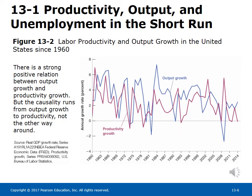The percentage change in employment equals the percentage change in output minus the percentage change in productivity. Empirical evidence from Figure 13-2 shows labor productivity and output growth in the United States since 1960. There is a strong positive relation between output growth and productivity growth, but the causality runs from output growth to productivity, not the other way around in the short run. Even when a change in productivity is exogenous due to improvement in technology, its effect on employment in the short run is ambiguous.